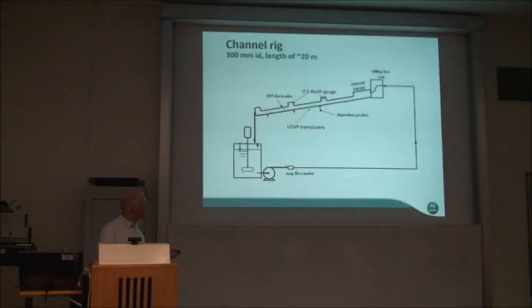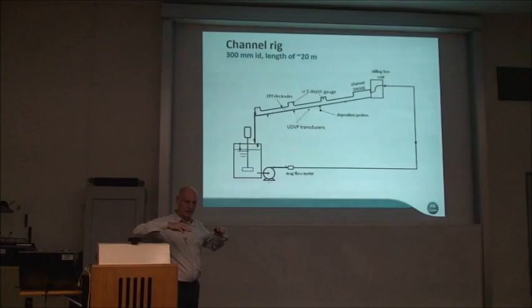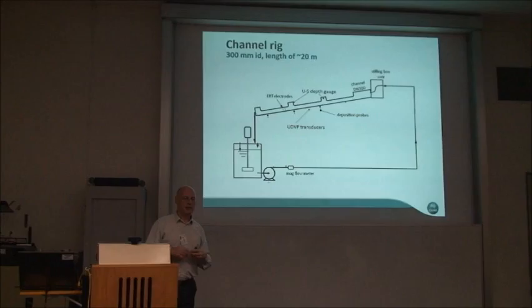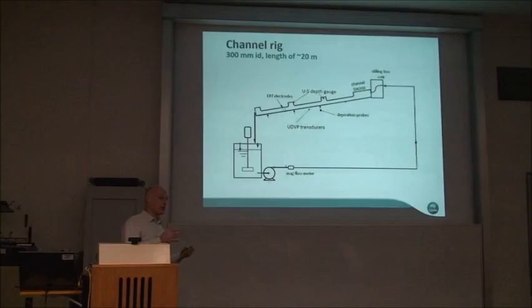We have two ultrasonic depth gauges measuring the height of the flow — they need to be equal because if the flow surface is not parallel to the channel slope, we have an incorrect energy gradient and don't have steady state flow, or deposition is occurring. We also have ERT electrodes — electrical resistance tomography — as a method of measuring concentration across the flow cross-section, giving an indication of where material has been deposited or when it's been fully suspended.